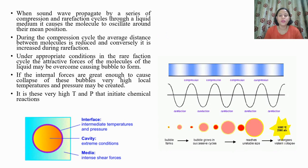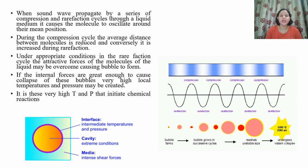When a sound wave propagates through a liquid medium by a series of compression and rarefaction cycles, it causes molecules to oscillate around their mean position. During the compression cycle the average distance between molecules is reduced, and conversely it is increased during the rarefaction cycle. Under appropriate conditions, in the rarefaction cycle the attractive forces of the liquid molecules may be overcome, causing a bubble to form. If the internal forces are great enough to cause collapse of these bubbles, very high local temperature and pressure may be created, and it is this that initiates a chemical reaction.